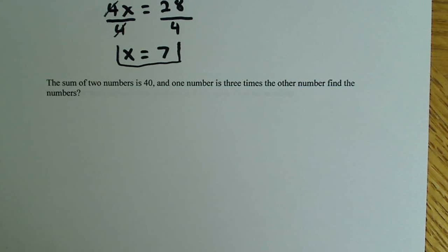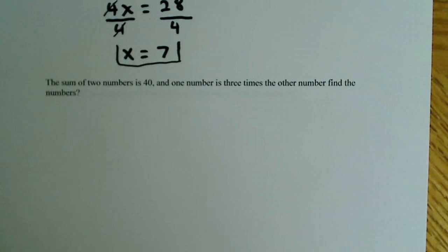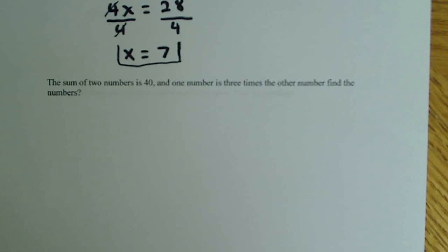Okay, so we'll do the next problem in the numbers section here, and it says the sum of two numbers is 40, and one number is three times the other number. Find the numbers.